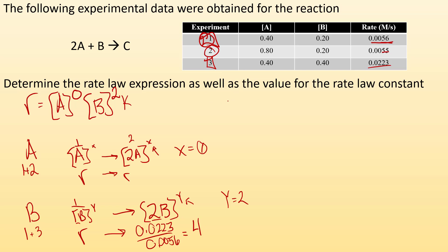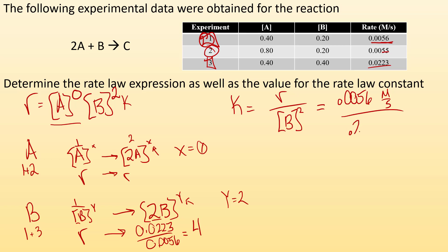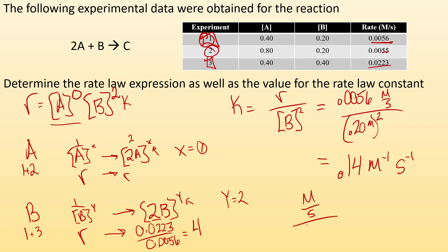Now to figure out K: K equals the rate divided by [B] squared — I can omit A because it's to the zero power. Using trial one: K equals 0.0056 molar per second divided by 0.20 molar squared, giving 0.14. For the units: molar per second divided by molar squared — keep, change, flip — that cancels leaving one molar on the bottom, and seconds on the bottom too. So the units are molar to the negative one times second to the negative one. That is the rate law expression and the value for K.